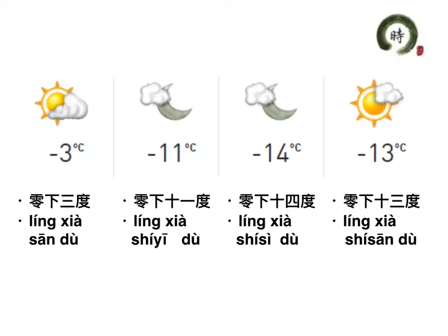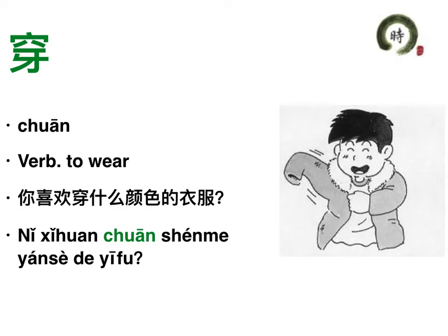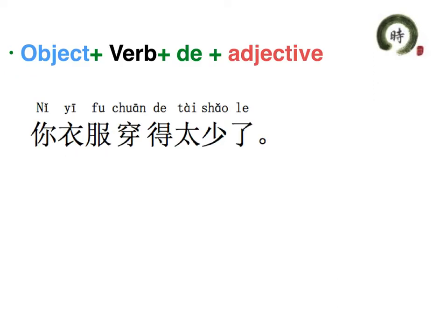Next one is 穿. 穿 means 'to wear.' 你喜欢穿什么颜色的衣服？穿衣服. In the dialogue, we have one sentence like this: 你衣服穿得太少了。